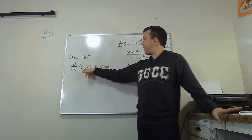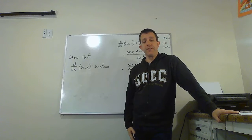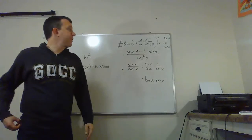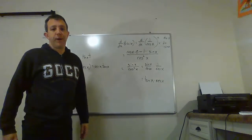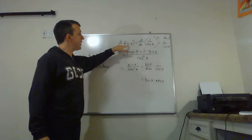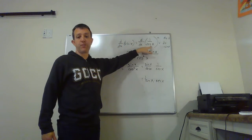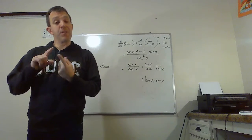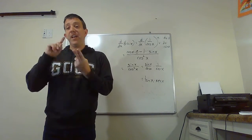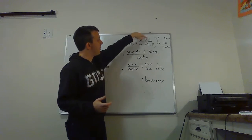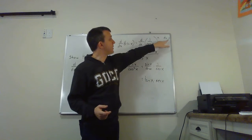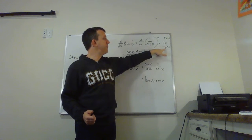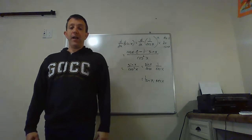I want to show that the derivative of secant really is secant times tangent. We're going to use the quotient rule. We start by noting that secant is really the same as 1 over cosine. I'll call the 1 on top u, so du is zero. The cosine on the bottom is v, which makes dv equal to negative sine x.